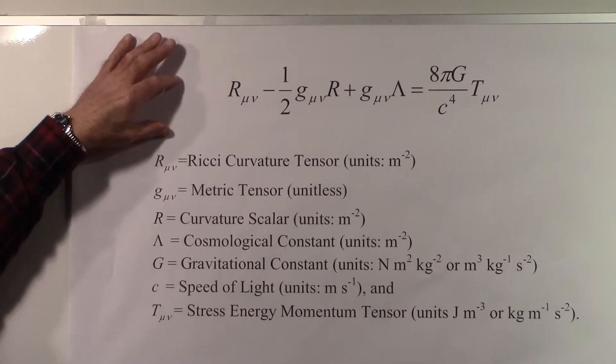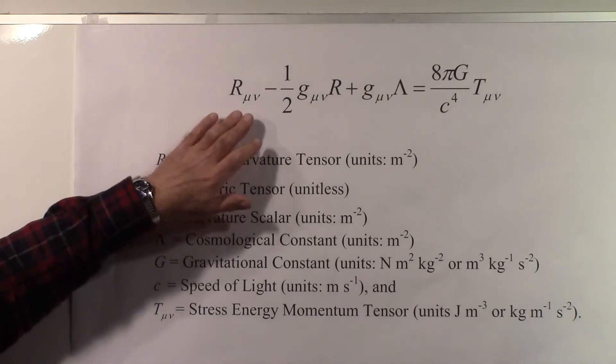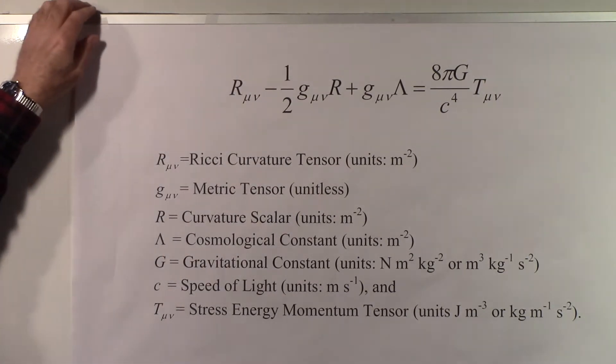And this is a tensor equation. The indices are U and V. U and V each represent the three space coordinates and one time coordinate.